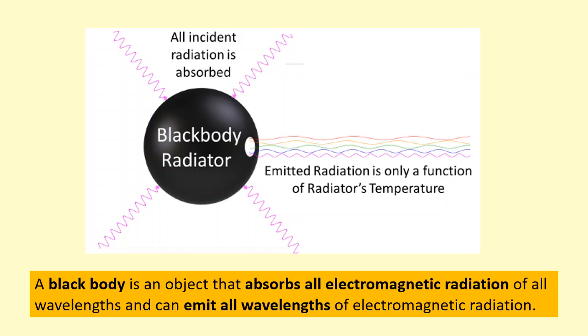A black body emits all wavelengths as well. You can see here that if anything hits it, it gets absorbed, but it's also emitting radiation in a range of all the different wavelengths. However, how much of each wavelength it emits depends on the temperature of the object.